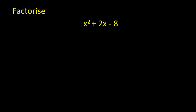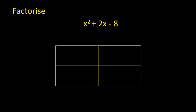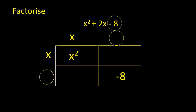Let's look at another example. Here is my quadratic expression. Once again, I'm going to draw my window. In the top left-hand corner I write x squared, and in the bottom right-hand corner I write minus 8. I can write in x and x here because they both multiply to give x squared. But I do not know what numbers to put for the remaining terms — I need two numbers that multiply to give negative 8, and when I add them, I need to get positive 2.